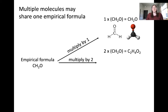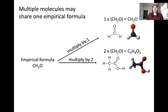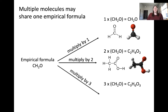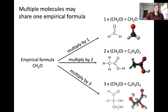We can also multiply this empirical formula by 2, giving us the molecular formula C2H4O2. This corresponds to acetic acid, as shown by these models. Another option is to multiply by 3, giving us the molecular formula C3H6O3, represented by the models shown here. These are three different molecular formulas — meaning three different compositions of atoms within the molecule — but they share the same empirical formula, which in all cases is CH2O.